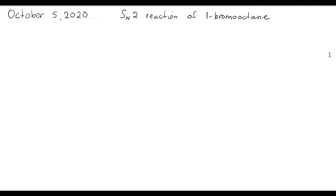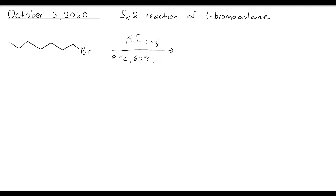Now we need to write out the reaction scheme. We'll start by drawing our substrate, then draw an arrow. Above the arrow, we write out our reagents — in this case, potassium iodide. Beneath the arrow, we write down any solvents and reaction conditions. On the right side, we write out the product. Then we make a table for all the compounds involved in this reaction. We list all compounds, giving large or complex molecules a number. Bromooctane will be compound 1, potassium iodide stays as is, the phase transfer catalyst will be compound 2, and our product will be compound 4 for consistency with the procedure.